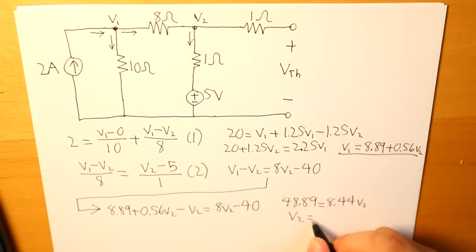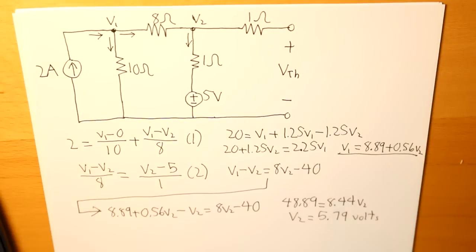Now V2 is going to be 5.79 volts. And that's what our Vth is going to be. So Vth is equal to V2 as I've said, and that is equal to 5.79 volts.